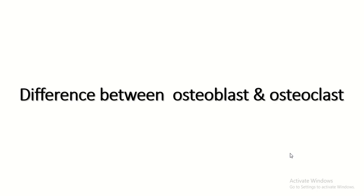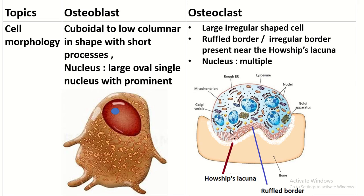Welcome to the Easy Human Anatomy channel. Today I discuss the difference between osteoblast and osteoclast. The shape of the osteoblast is pivotal — low columnar in shape with short processes. The nucleus of the osteoblast is large and oval with prominent nucleoli, and it is eccentrically present.